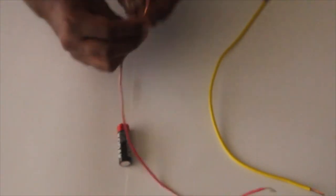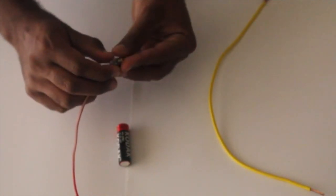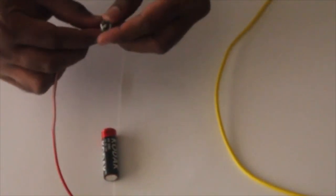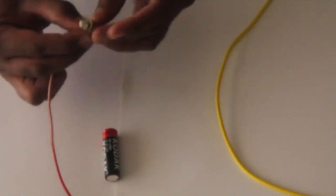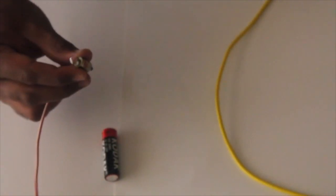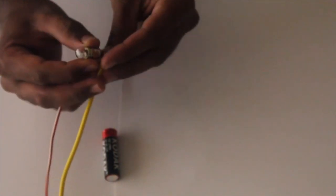Let us connect one terminal of the bulb with one colored copper wire, and the other terminal of the bulb with a different colored copper wire.